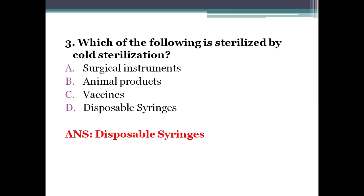Cold sterilization is done by ionizing radiations, which include gamma rays and cosmic rays. These are highly lethal to all cells — they kill vegetative bacteria and spores by damaging the DNA. It is called cold sterilization because there is no appreciable increase in temperature during this procedure.